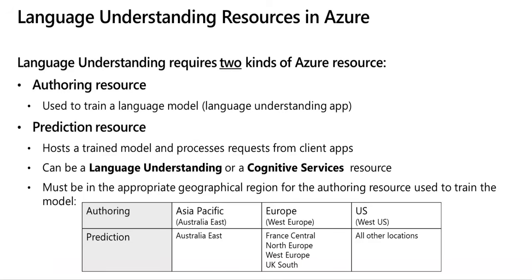Our topic is Language Understanding resources in Azure. Language Understanding requires two kinds of Azure resources: authoring resource and prediction resource. The authoring resource is used to train a language model, while the prediction resource hosts a trained model and processes requests from client applications. To use the language understanding service, you will need to create a language resource in Azure, which will be used for both authoring your model and processing prediction requests.